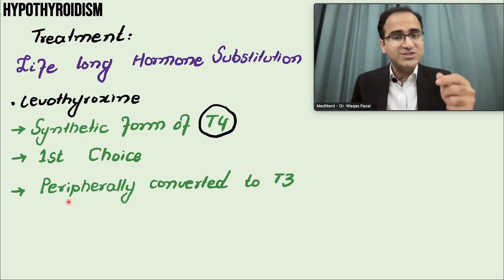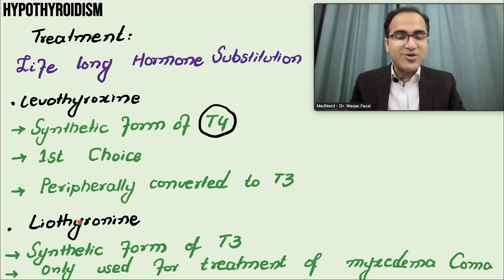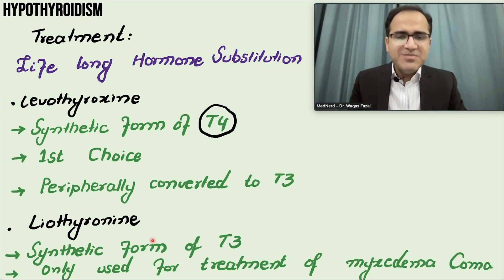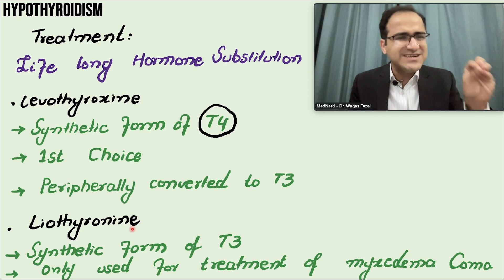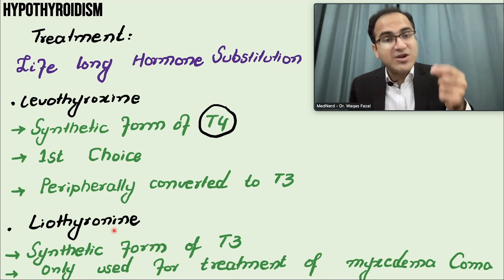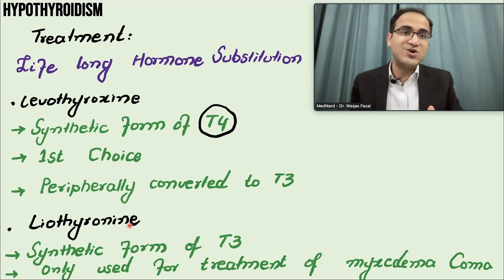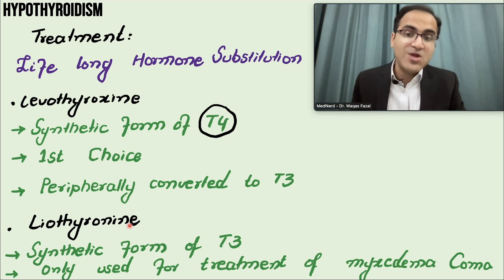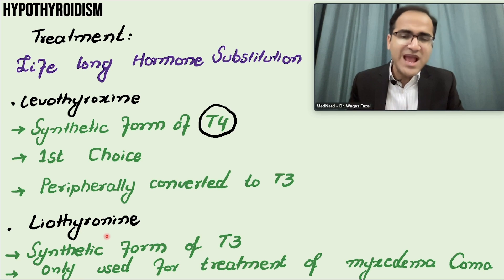T4 is peripherally converted to the active form, T3. Liothyronine is a synthetic form of T3, but liothyronine is not used for the treatment of hypothyroidism except in certain specific cases like patients with myxedema coma. Liothyronine is not used routinely because it has a very short half-life.